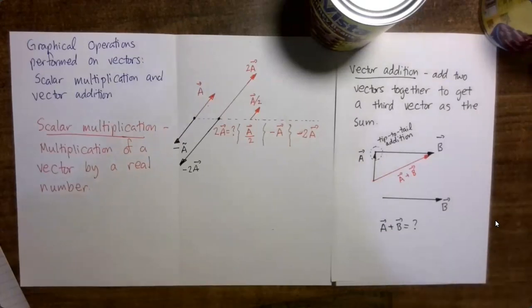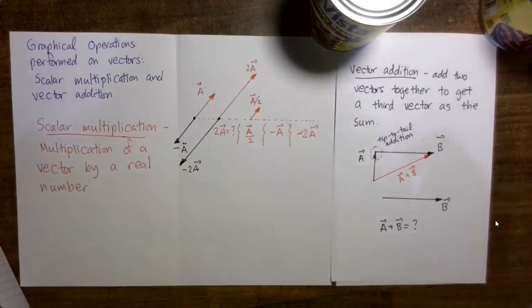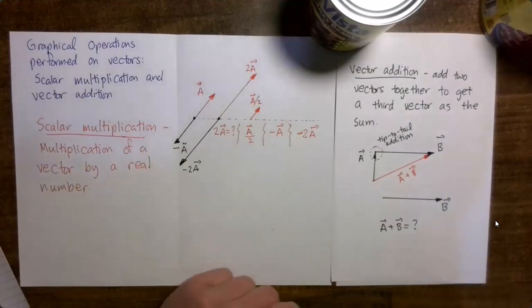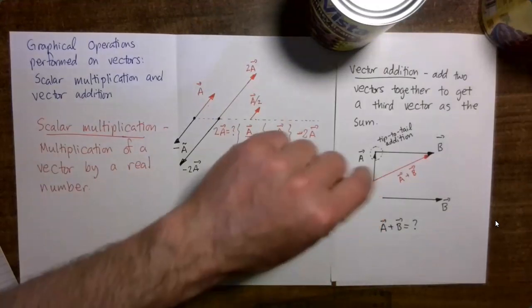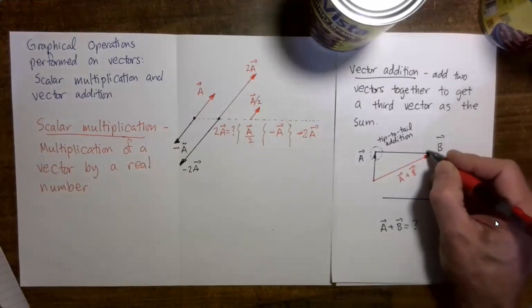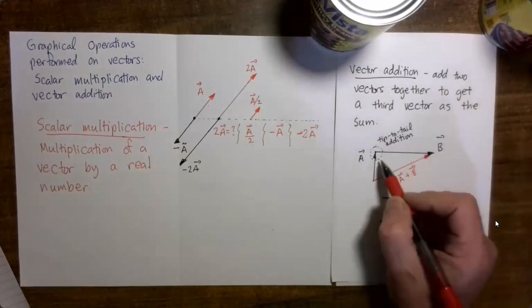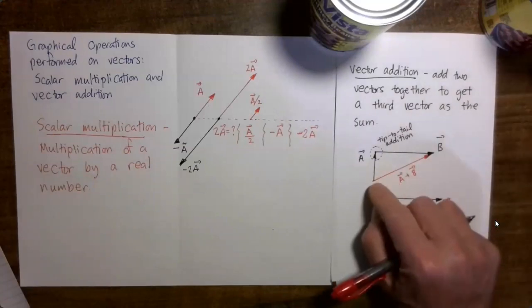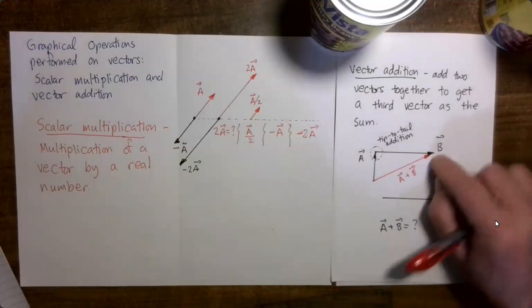Suppose you are looking at a figure of three vectors and did not know which two vectors were being added to get the third. How could you figure it out? What you would do is look to see where there was a tip-to-tail connection. Is there a tip-to-tail connection here? No, that's just two tails. Is there one here? No, that's two tips. Is there one here? Yes — we have the tip of one vector touching the tail of the other, so it must be that these two vectors are being added to produce that third vector.